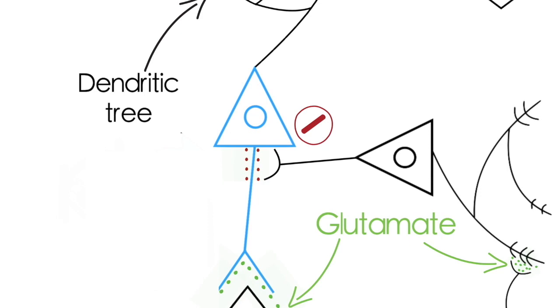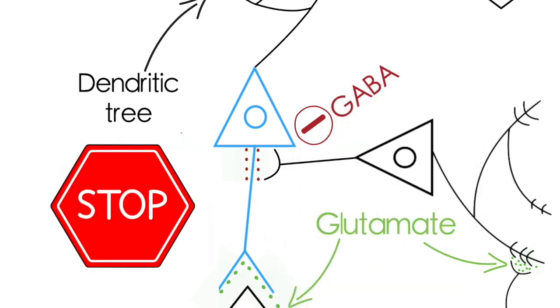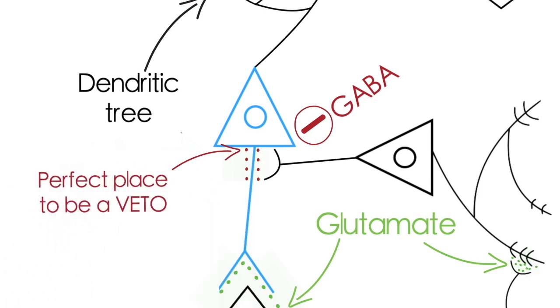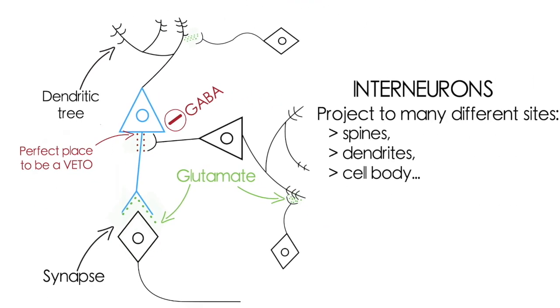Now a key function of interneurons is that they're inhibitory, and to do this they use the transmitter GABA. So what you can see is that by synapsing just here, this type of interneuron is in a perfect place to act as a veto.